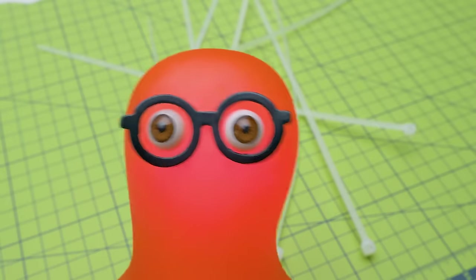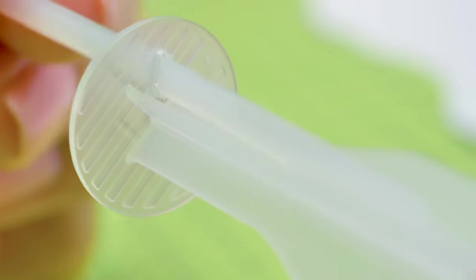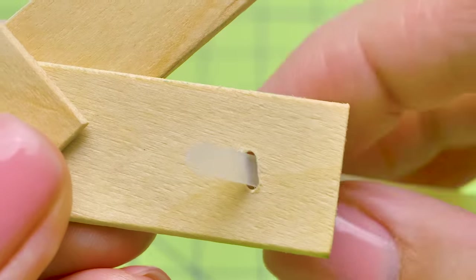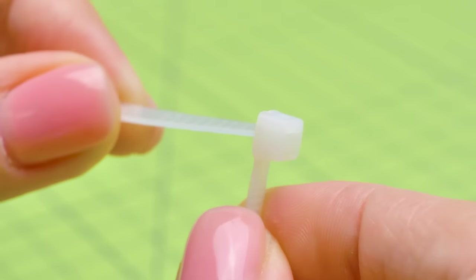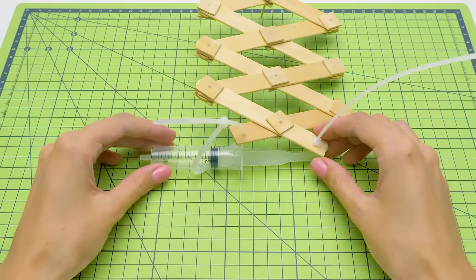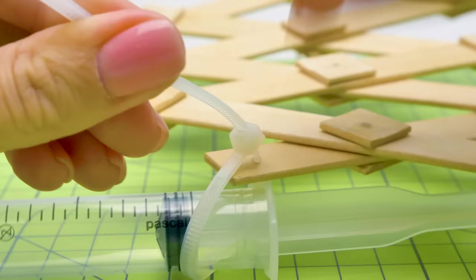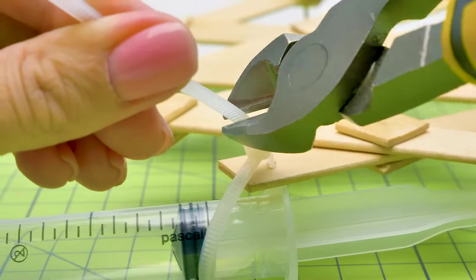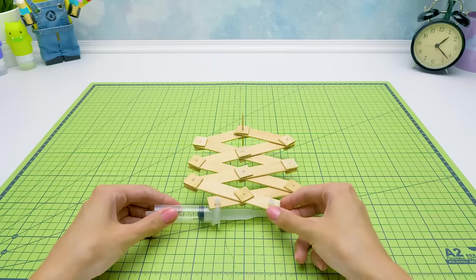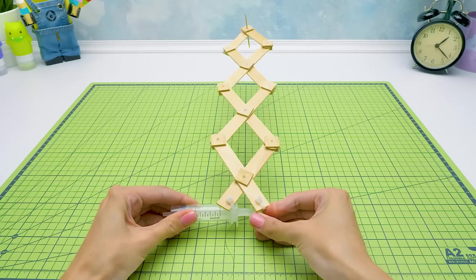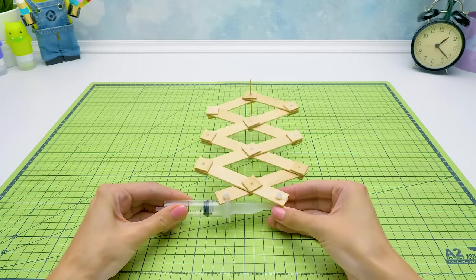Syringes play an important role in our craft. They will work as a hydraulic system. Insert it carefully like this. And now we'll connect it to our mechanism. We'll remove the excess. Everything should look beautiful. When the syringe closes, the spring will stretch. And when it opens, it will compress.